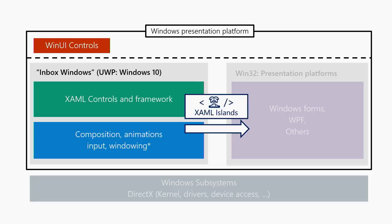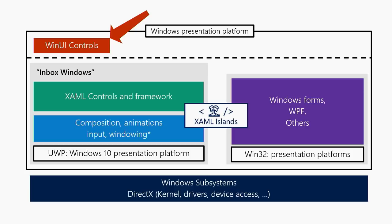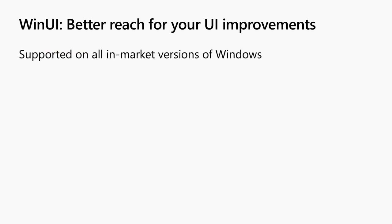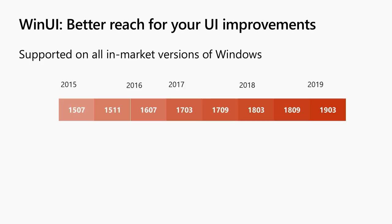Joe mentioned a bit already about WinUI and moving out of box, but we wanted to talk about why we did that and what benefits it brings. One of the big drivers was better reach for your UI improvements. Part of this is because we can support this on all in-market versions of Windows 10. Maybe six months ago you reached out to us about a problem, we decided that's a great feature, got to work, and it's in the 1903 release of Windows that you now have access to.